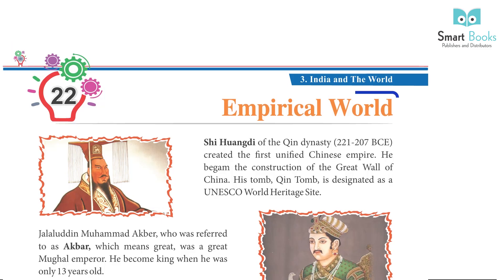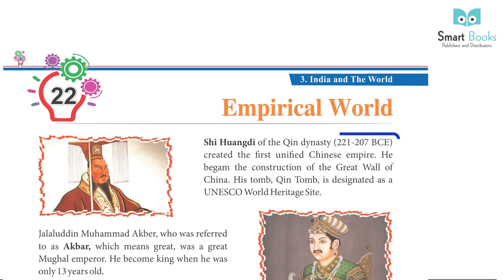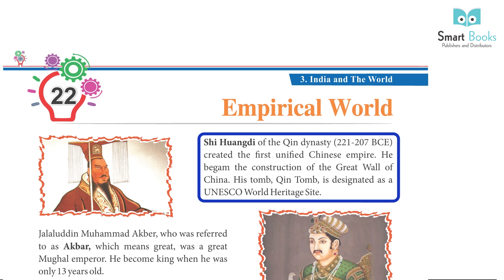Chapter 22: Empirical World. 1. Xi Huangdi of the Qin Dynasty, 221–207 BCE, created the first unified Chinese Empire. He began the construction of the Great Wall of China. His tomb, the Qin Tomb, is designated as a UNESCO World Heritage Site.